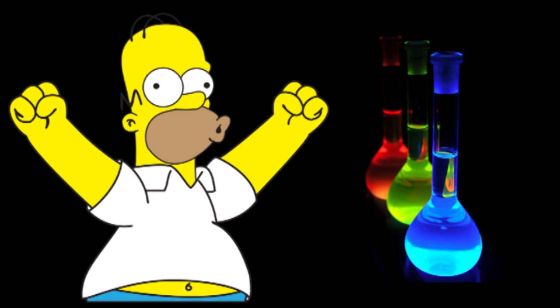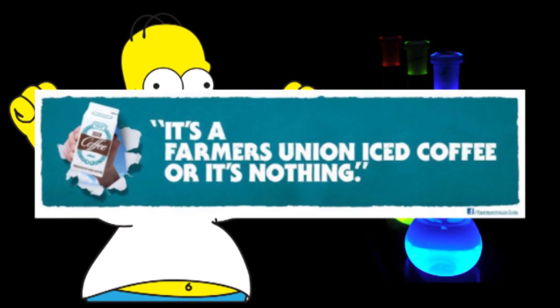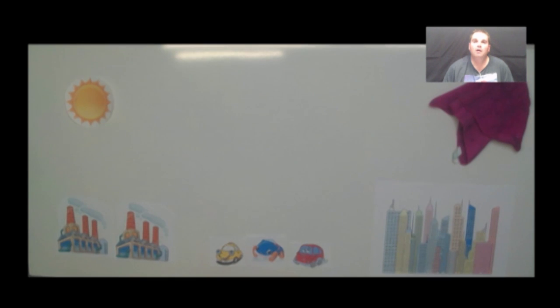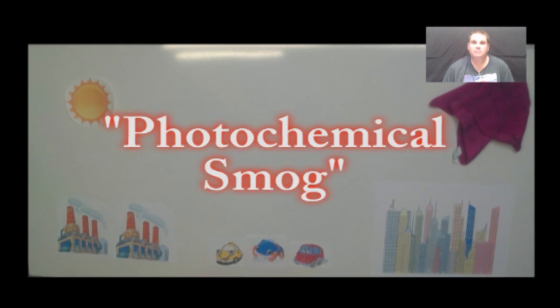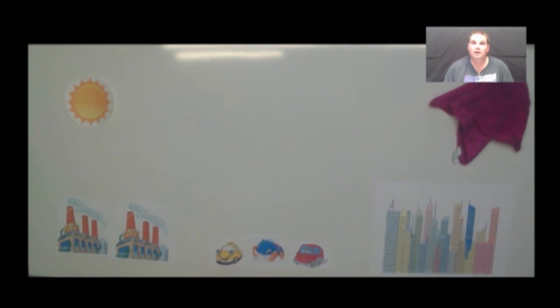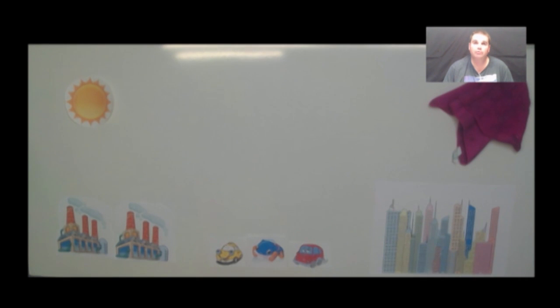It's time for another amazing chemistry video with Mr. Stapleton. Hi guys, welcome to the next video for the elemental and environmental topic. This one is all about photochemical smog. So what we're going to be looking at today is photochemical smog, what causes it, what it is, and we're also going to be looking at primary and secondary pollutants, which is something you need to know as well.